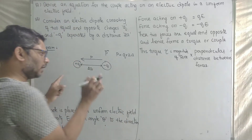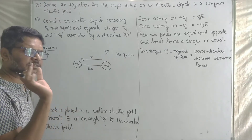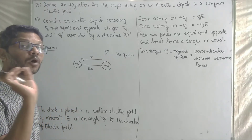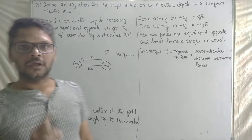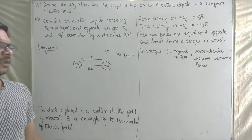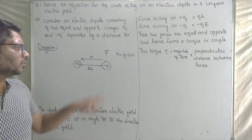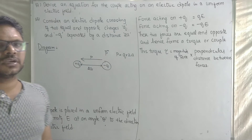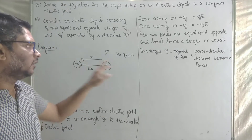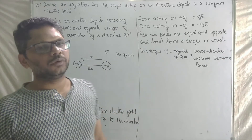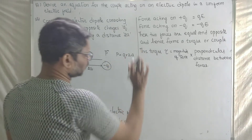To summarize the key points: an electric dipole consists of two equal and opposite charges separated by a very small distance. The dipole moment direction is from negative charge to positive charge. The magnitude is P equal to Q into 2a.